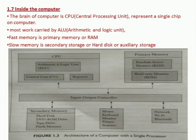ALU represents Arithmetic and Logical Unit. Fast memory is primary memory, or RAM. Memory represents the storage of values or data. That can be stored in primary memory or secondary memory. But fast memory is primary memory — that is nothing but RAM, Random Access Memory. Slow memory is nothing but secondary memory — it is not as fast compared to RAM. We can call it as a hard disk or auxiliary storage.